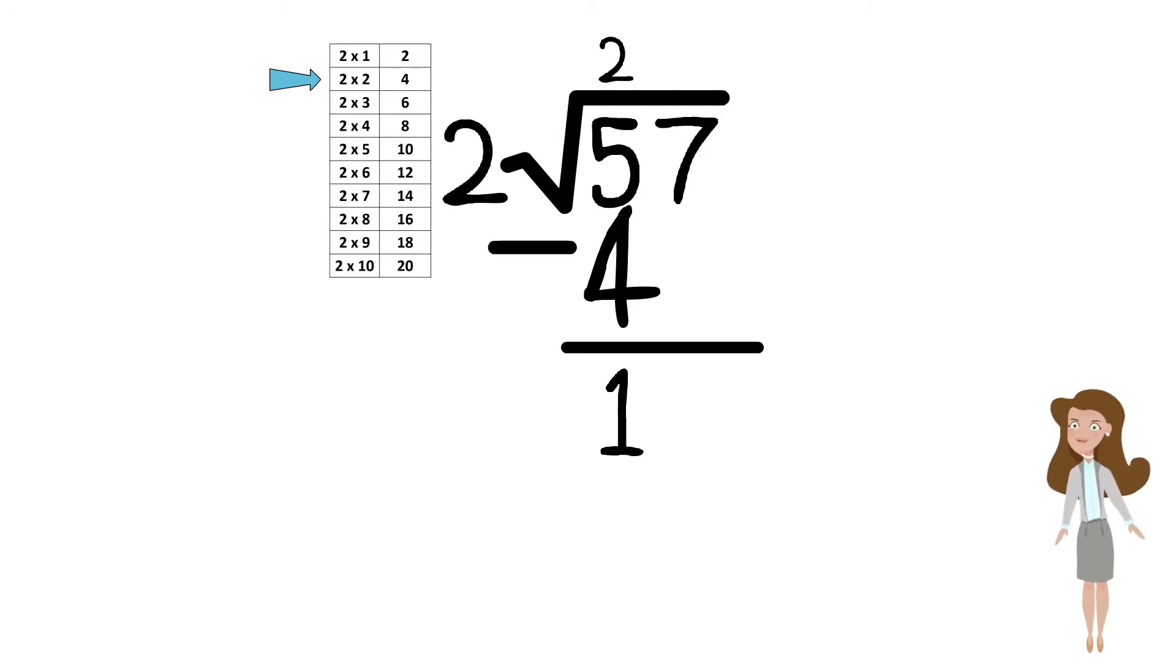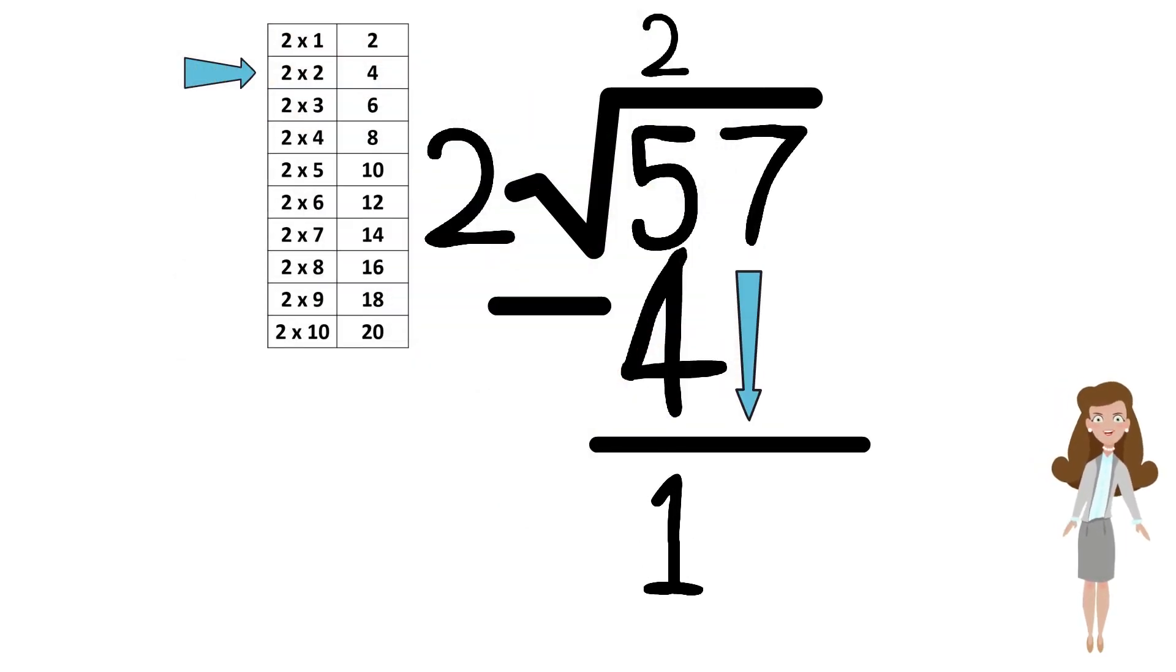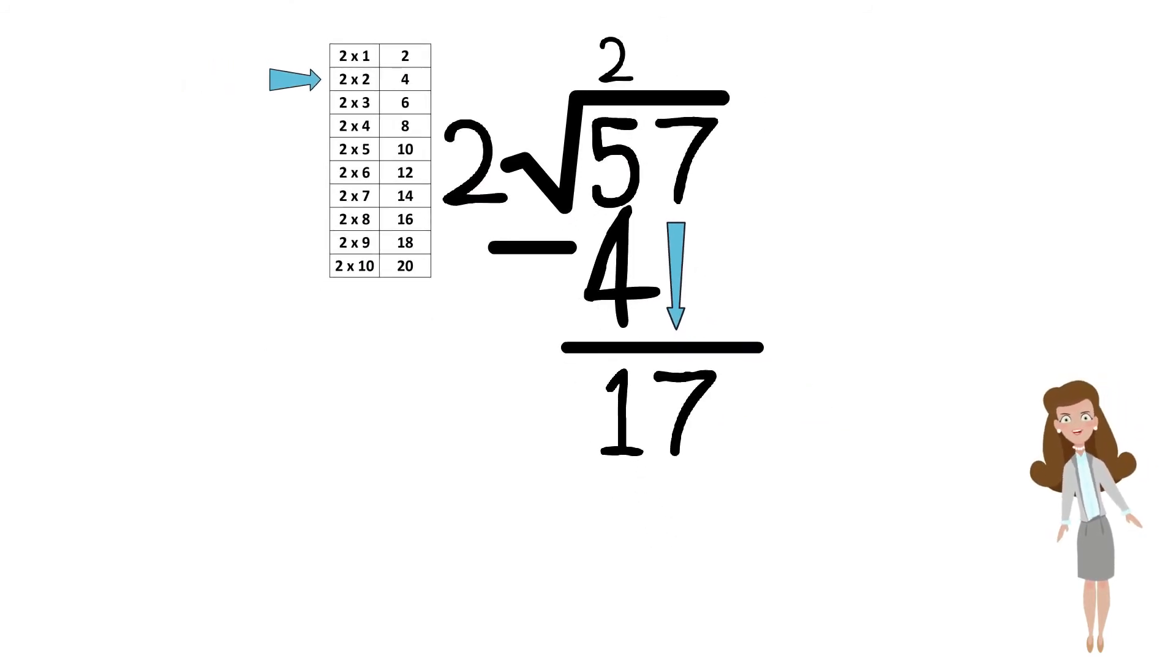Now, we will take the next digit, 7, and bring it down to be beside the result of 1. We now see a number 17.